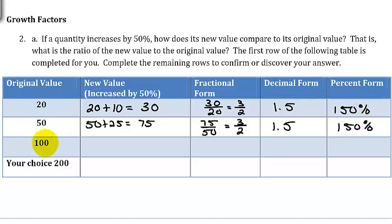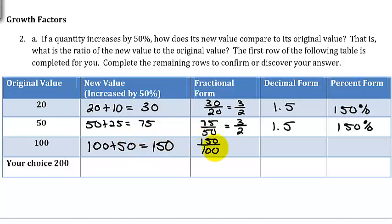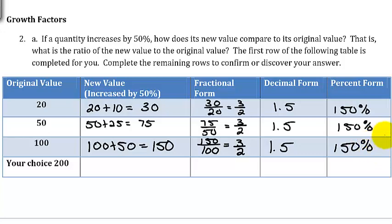With 100, half of 100 is 50, so the new value is 150. The new value divided by the old value is 150 divided by 100, the same as 15 tenths, which reduces down to 3 halves again. The decimal and percent forms are the same as before.